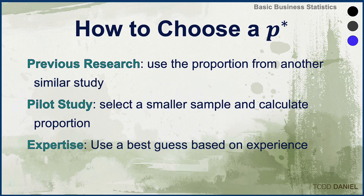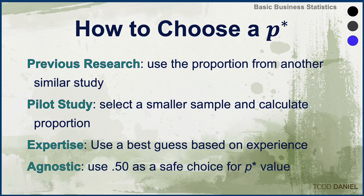Or we could rely on our expertise. The experience that we have as researchers teaches us something and we know what to expect in this particular population. But there's one more option when we're using proportions, and that is to be agnostic — the flip of a coin, 50%. We could plug in a value of .50, which is a safe choice for our proportion planning value.